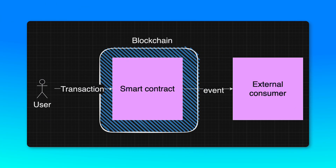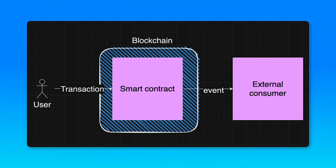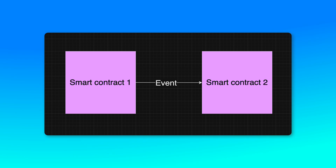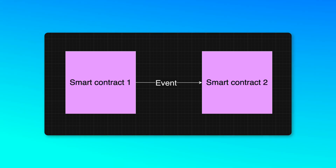A smart contract can only react to incoming transactions. It can emit events, but these events were previously only meant to be consumed by external entities off-chain. Once these events are emitted, even though they are stored on the blockchain, they are not accessible anymore by smart contracts. A smart contract cannot monitor or react to any events, whether they are off-chain or on-chain.